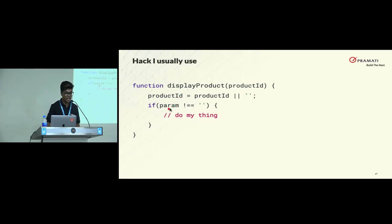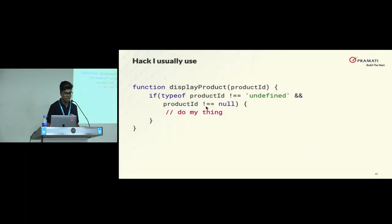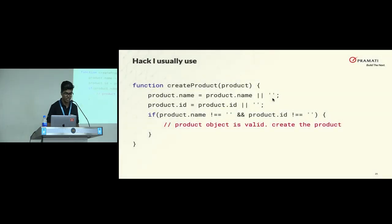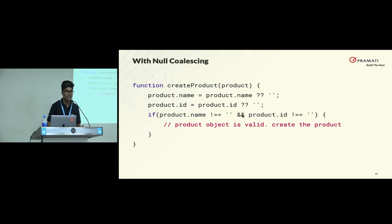But my product ID might be zero, and at that time I cannot use the OR operator — I have to check if it is not undefined or if it is not null, then I can do my thing. That becomes challenging if we have to compare multiple properties in the same condition. That is when null coalescing is very helpful. With null coalescing, it will only be considered if my value is null or undefined — it only covers those two values. My zero will still be valid as a product ID.